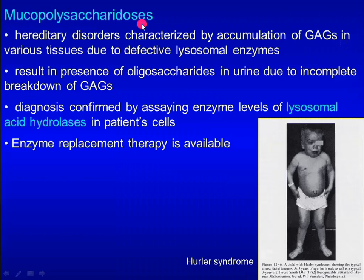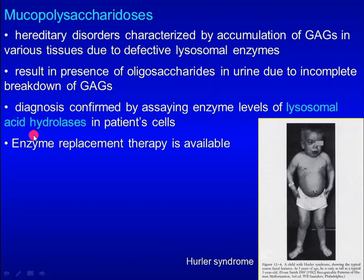Mucopolysaccharidoses are hereditary disorders characterized by accumulation of glycosaminoglycans in various tissues due to defective lysosomal enzymes. They result in presence of oligosaccharides in urine due to incomplete breakdown of glycosaminoglycans. Diagnosis can be confirmed by testing enzyme levels of lysosomal acid hydrolases in patient cells. Currently, enzyme replacement therapy is available.